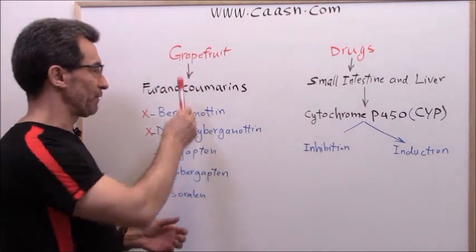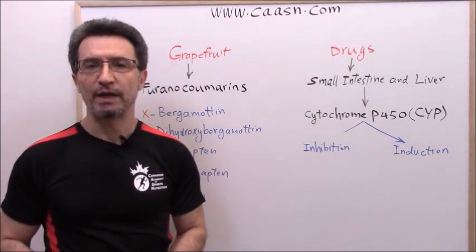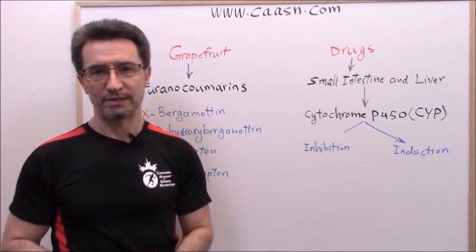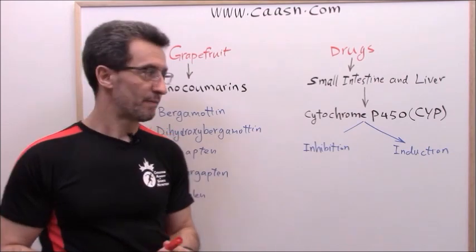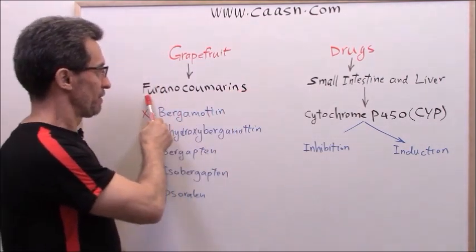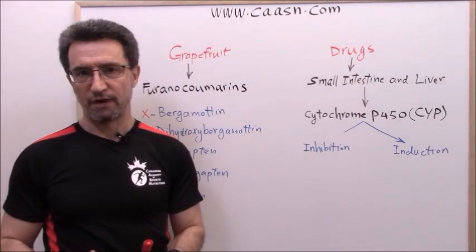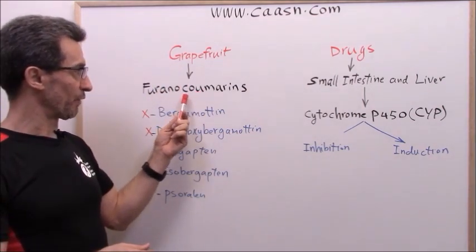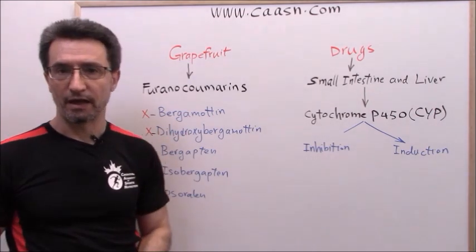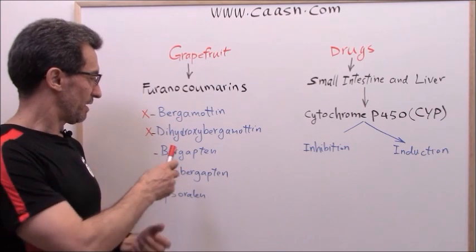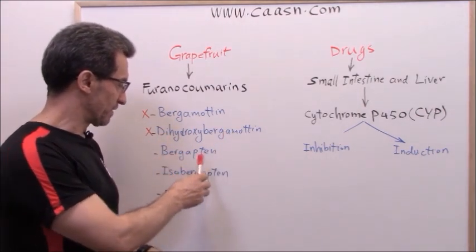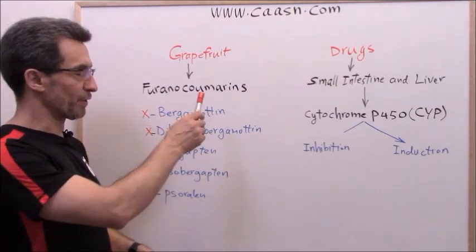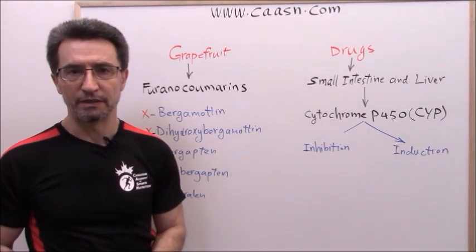In grapefruit, aside from vitamins and minerals, there are unique phytonutrients. One of the interesting phytonutrients found in grapefruits are called furanocoumarins. Furanocoumarins are a sort of phytonutrient found mostly in grapefruit. We have many subtypes. I have listed here the top five: bergamotin, hydroxybergamotin, bergapten, isobergapten, and suralin. There are a couple more, but these are the top five you can definitely find in grapefruit.